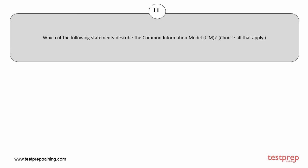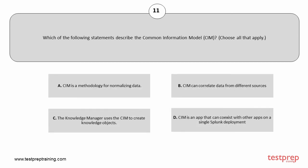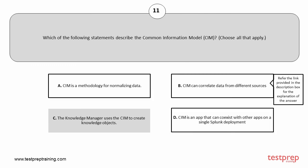Question number 11. Which of the following statements describe the Common Information Model? Choose all that apply. Your options are: A. CIM is a methodology for normalizing data. B. CIM can correlate data from different sources. C. The knowledge manager uses the CIM to create knowledge objects. D. CIM is an app that can coexist with other apps on a single Splunk deployment. The correct answers are option A, B, and D.